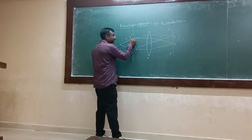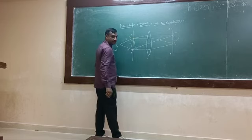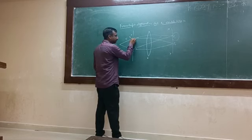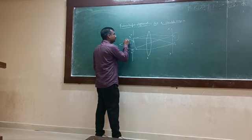So here we are considering the slit from the middle of the slit. The distance between here to here is e by 2.